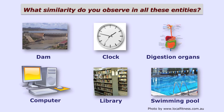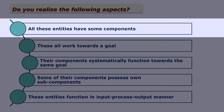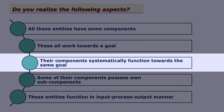There is a dam, a clock, digestion organs, a computer, a library, and a swimming pool. What similarity do you observe in all these entities? Think for a while. Do you realize that there are some common aspects? All these are entities. All these have some parts or components. These examples achieve some goals — they all work towards those goals, and even their components systematically function towards the same goals.